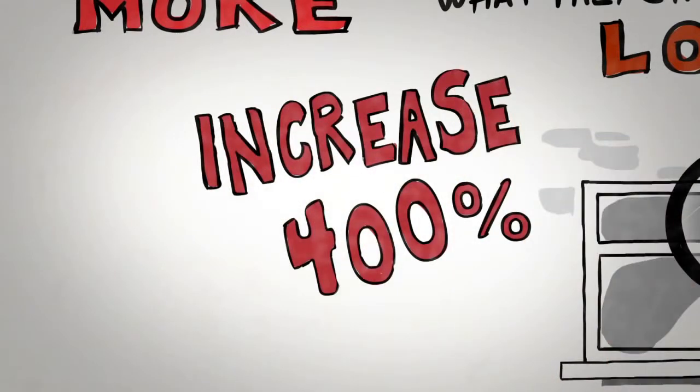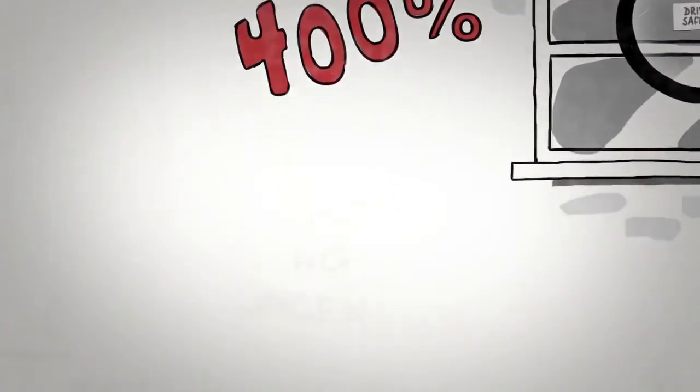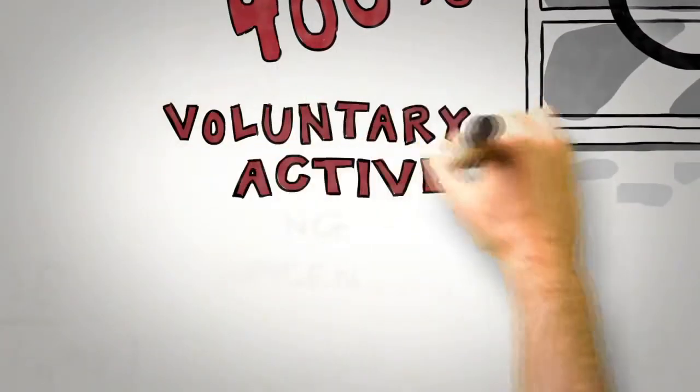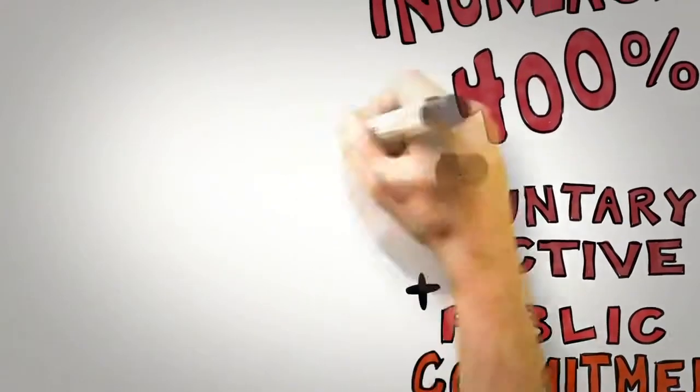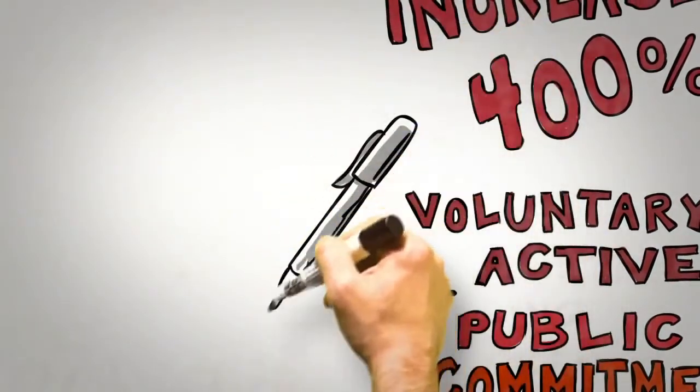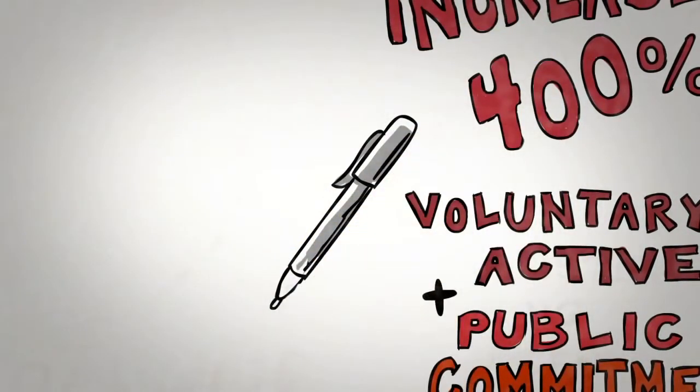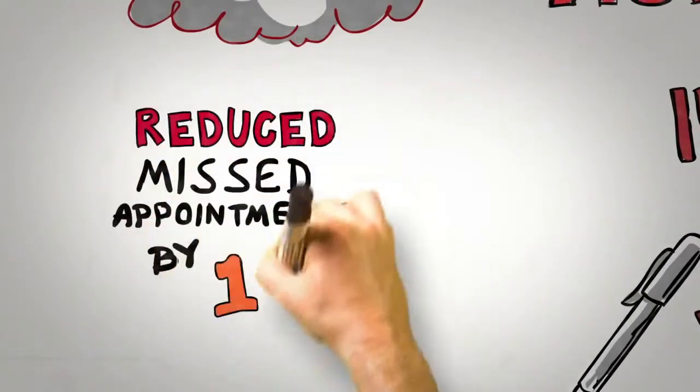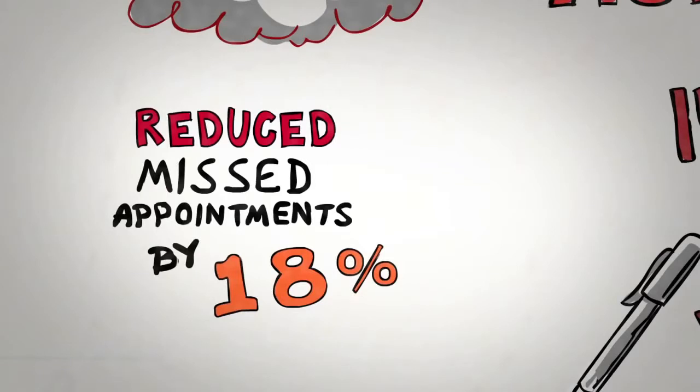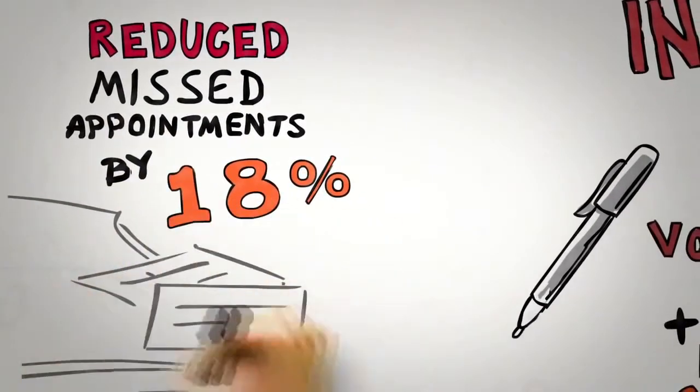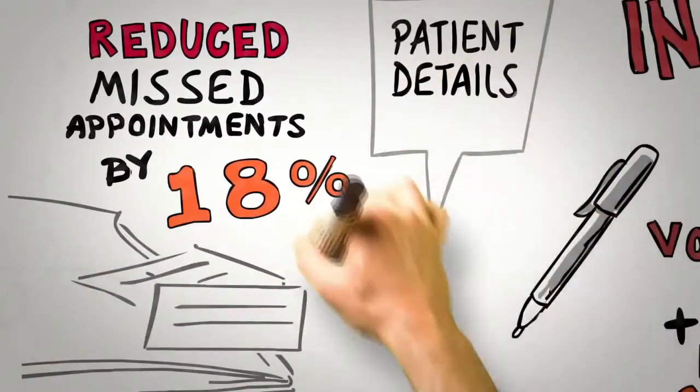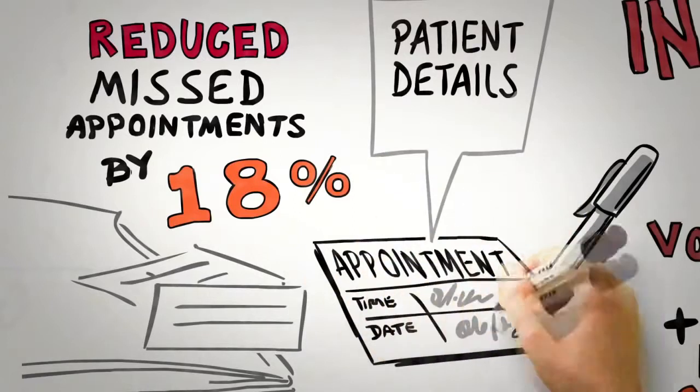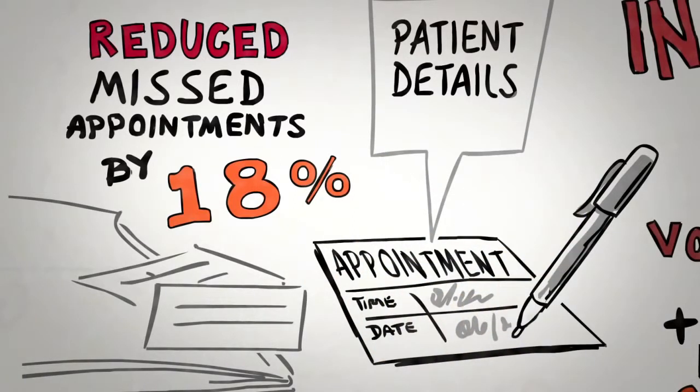So when seeking to influence using the consistency principle, the detective of influence looks for voluntary, active, and public commitments and ideally gets those commitments in writing. For example, one recent study reduced missed appointments at health centers by 18% simply by asking the patients, rather than the staff, to write down appointment details on the future appointment card.